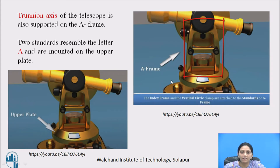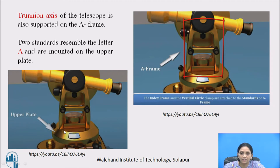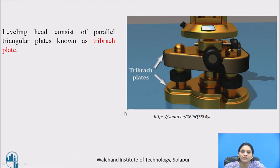The next part is the A-frame, also called the index frame. The index frame and vertical circle clamp are attached to the standard or A-frame. The trunnion axis of the telescope is also supported on the A-frame. This frame looks like the letter A — two standards resemble the letter A and are mounted on the upper plate. The leveling head consists of parallel and triangular plates known as the tribec plate.